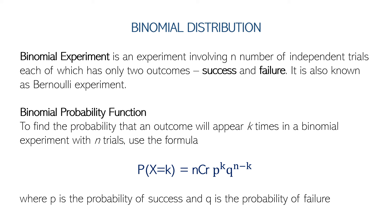Let's talk about binomial distribution. In a binomial distribution, a probability distribution, there is what we call a binomial experiment. It is an experiment involving n number of independent trials, each of which has only two outcomes: success and failure. It is also known as a Bernoulli experiment. So in this case, we're only expecting two possibilities — success and failure.